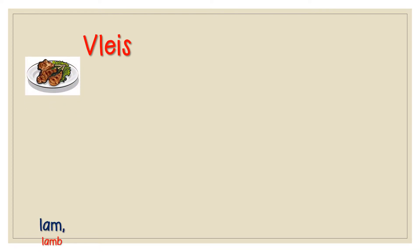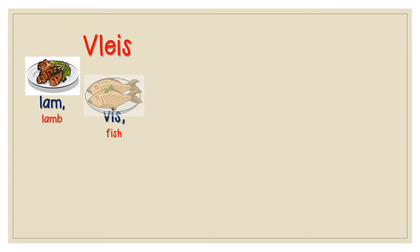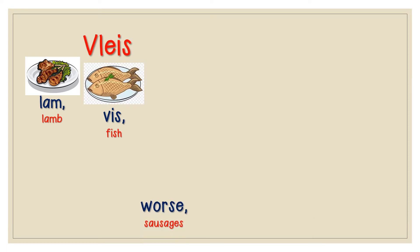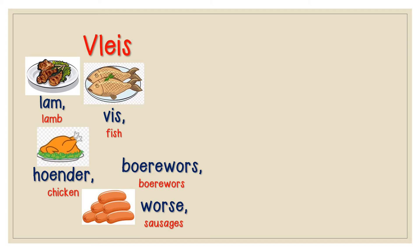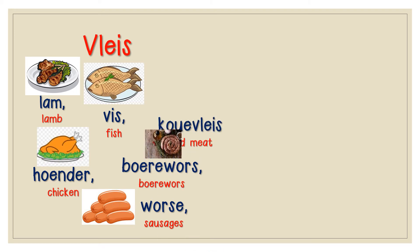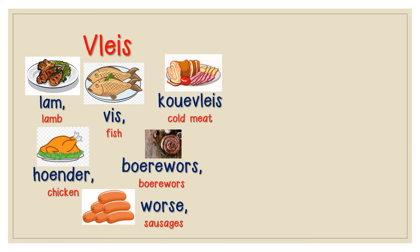So let's go through some of the words. Vlees — Meat. Lam — Lamb. Vis — Fish. Wors — Sausages. Hoender — Chicken. Beesvleis — Whole or Coarse Meat.